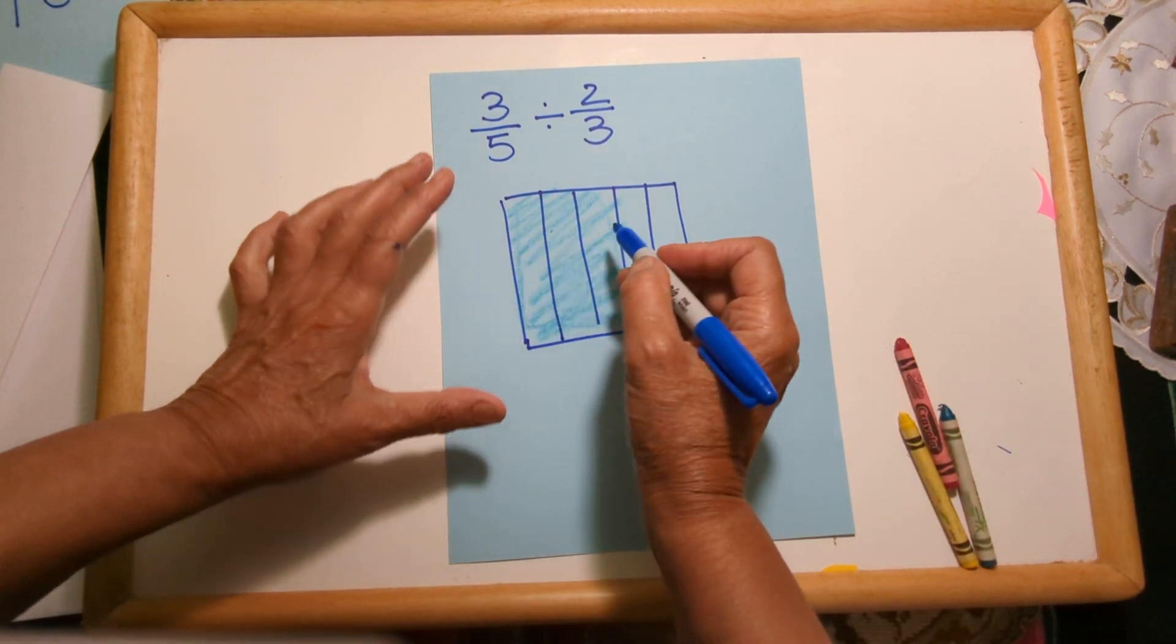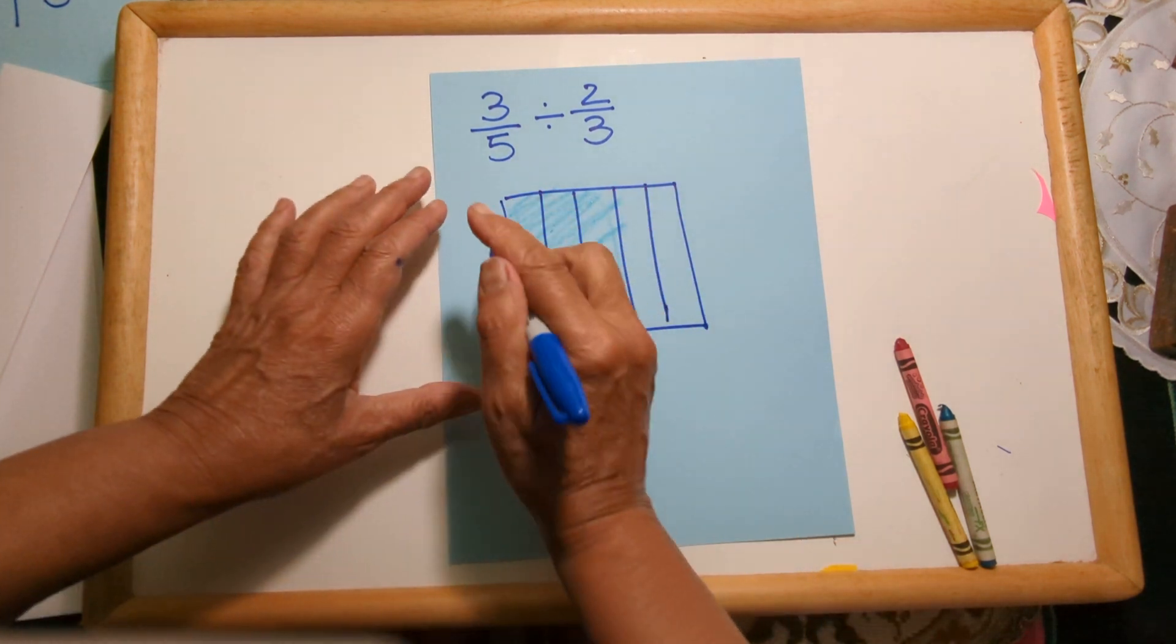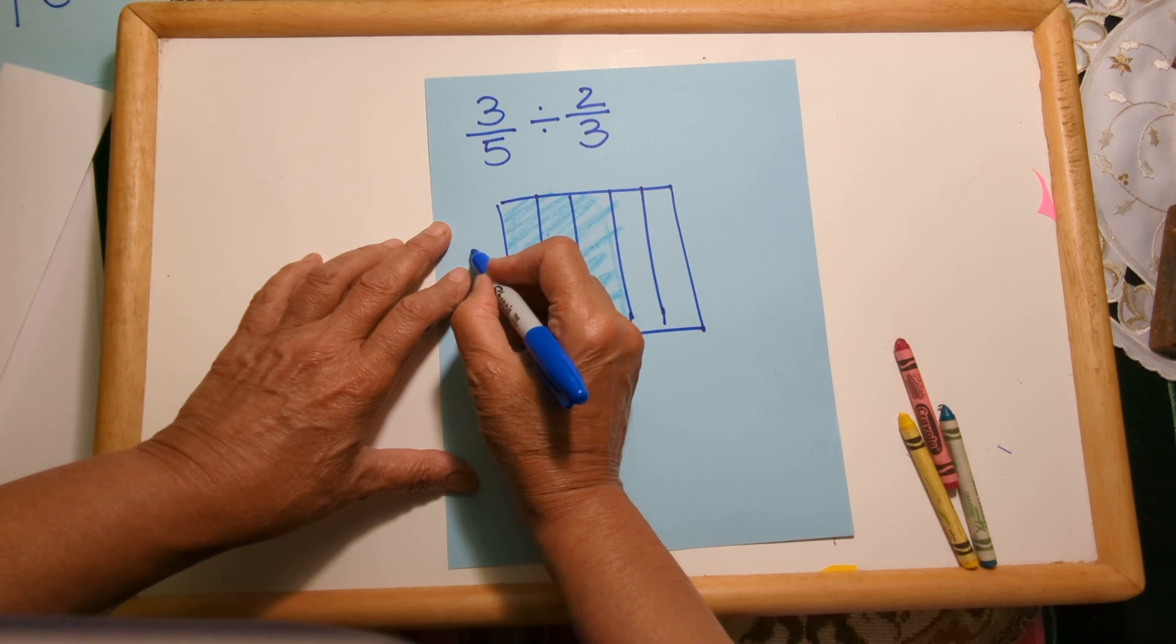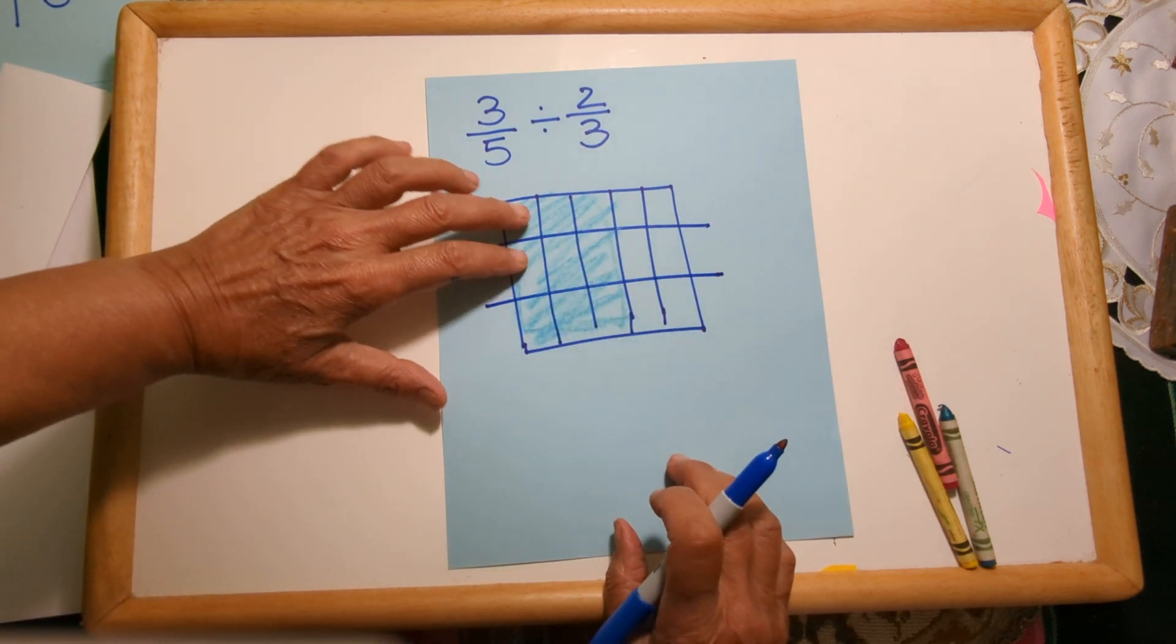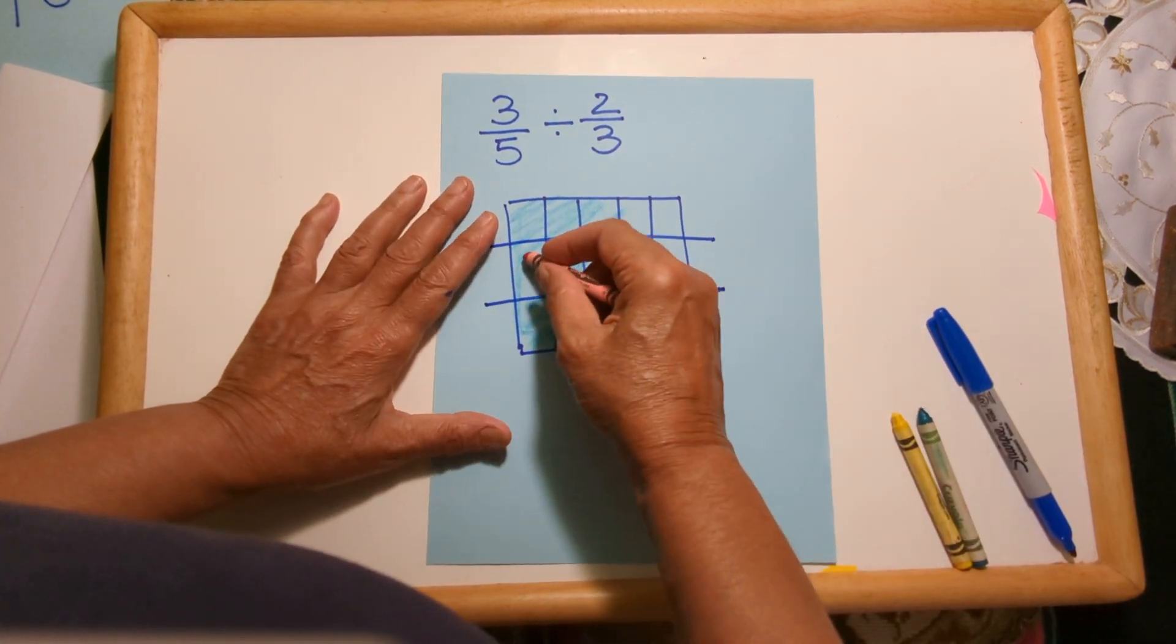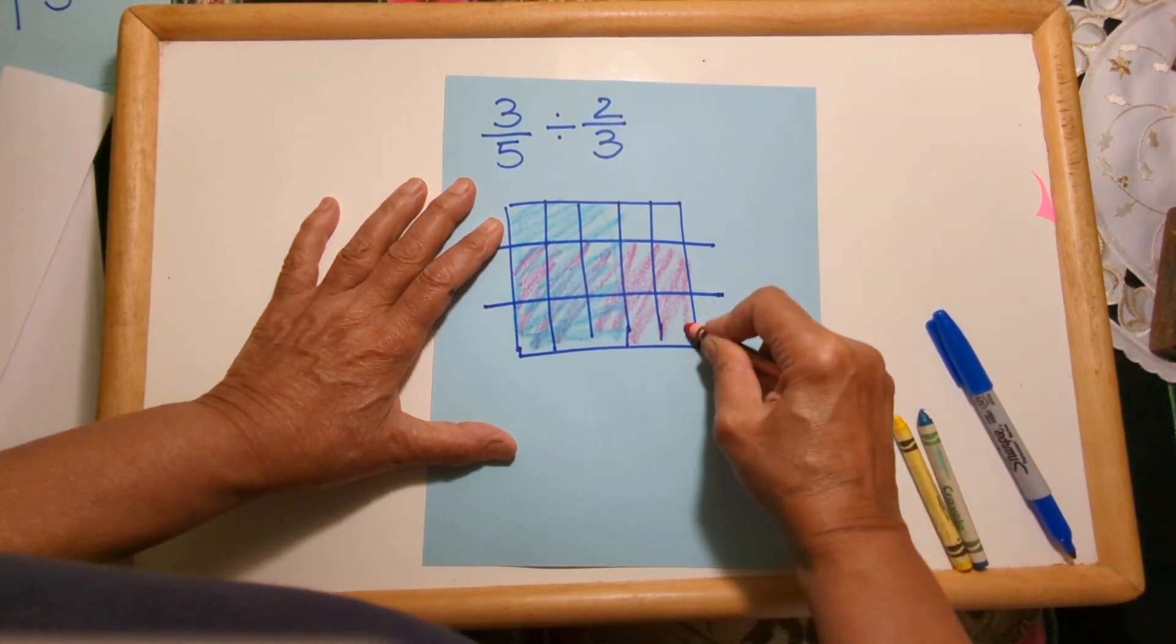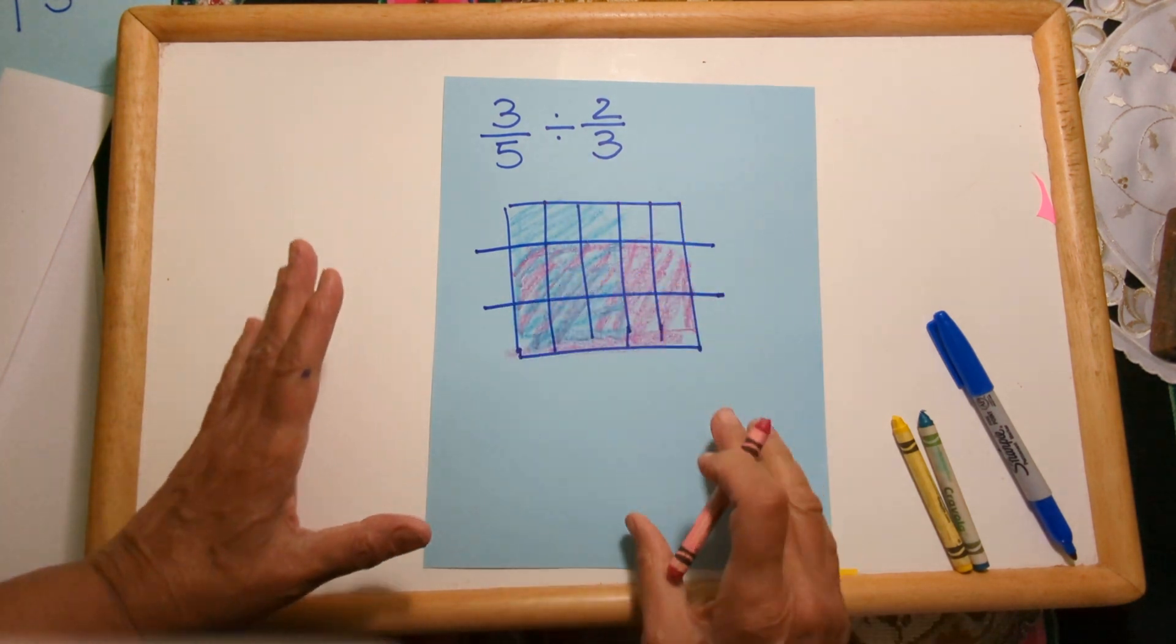So now I'm going to divide my square up into thirds. These are columns; I'm going to divide it into rows. There we go. So this is three-thirds, and two-thirds looks like this—two of those rows. Okay, now we have a common way to look at both of them.